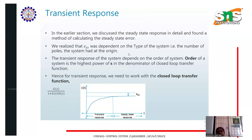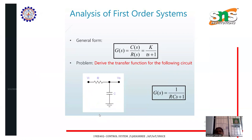Looking at this graph, if there is a sudden impulse, the response starts suddenly increasing from zero. The difference between the final value and the actual value is equal to the steady-state error. The time period where the response attains a constant value is equal to the steady-state response, and the remaining portion is the transient response.